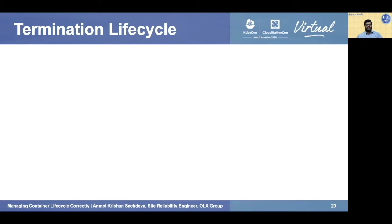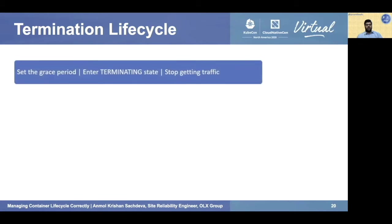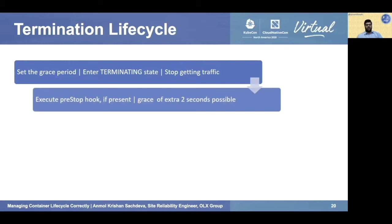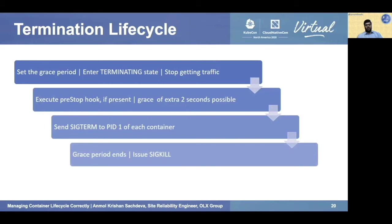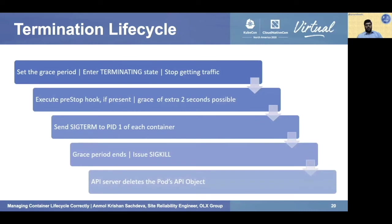Now let's talk about the termination lifecycle. First, the grace period is set — the default is 30 seconds — and the pod enters the terminating state and stops receiving traffic. Next, the pre-stop hook executes if it exists. Then the SIGTERM signal is sent to PID1 of each container in the pod. If using an init system, proper signal forwarding is ensured. When the grace period ends, SIGKILL is issued. Then the API server deletes the pod's API object and the pod terminates.